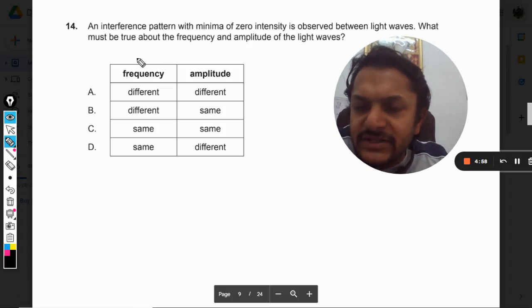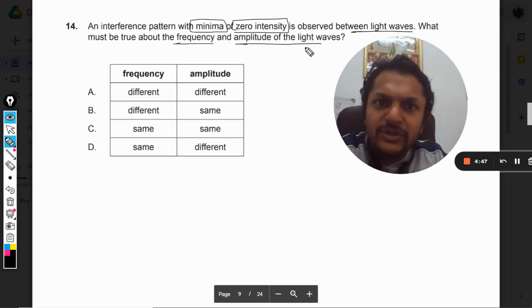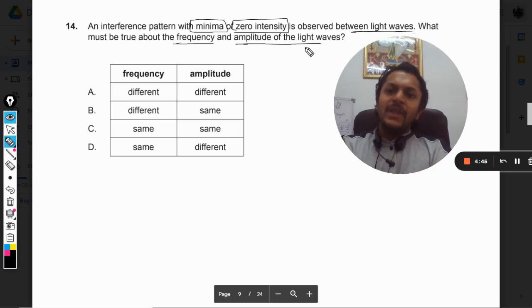Okay dear students, let us see what is there in this question. An interference pattern with minima of zero intensity is observed between light waves. What must be true about the frequency and the amplitude of the light waves?